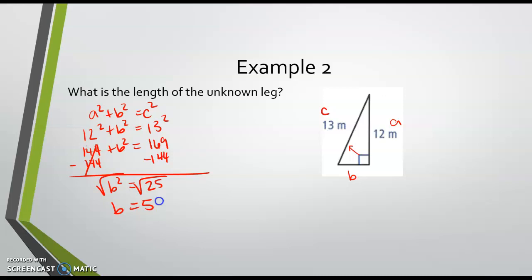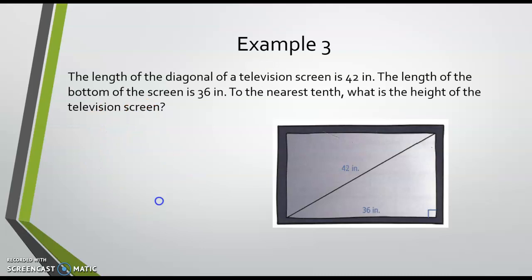All right, so moving to our next example. The length of the diagonal of a television screen is 42 inches. And actually, if you didn't know this, when you're buying a television screen and it says it's a 60-incher, it's the diagonal of the screen. It's not like from side to side - your length - it's your diagonal.